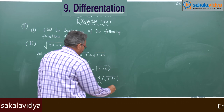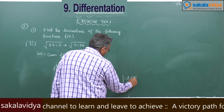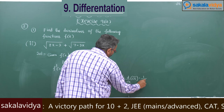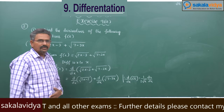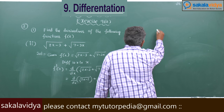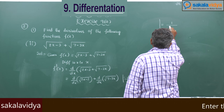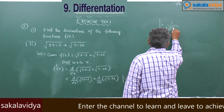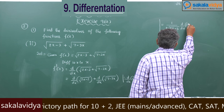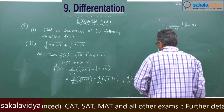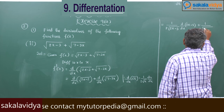Now, d/dx of root u is 1 by 2 root u into du/dx. So this can be written as 1 by 2 root(2x minus 3) into d/dx of (2x minus 3), plus 1 by 2 root(7 minus 3x) into d/dx of (7 minus 3x).